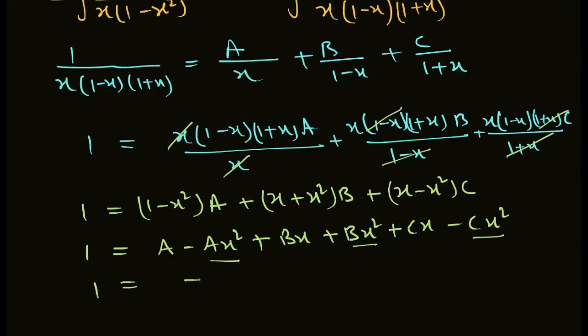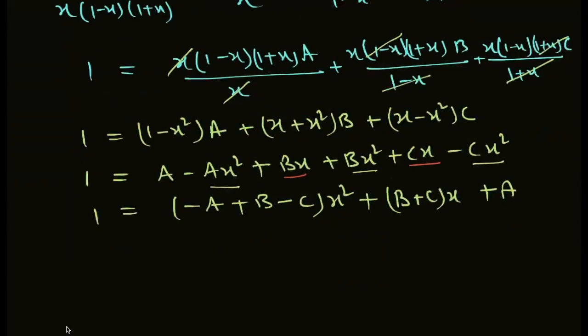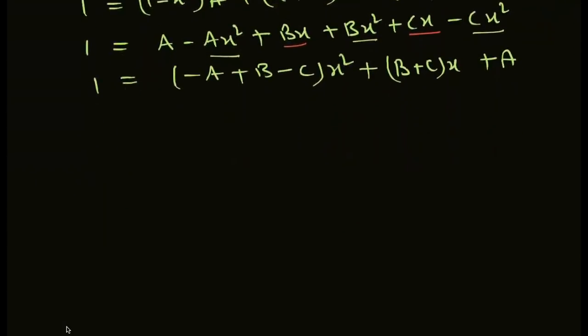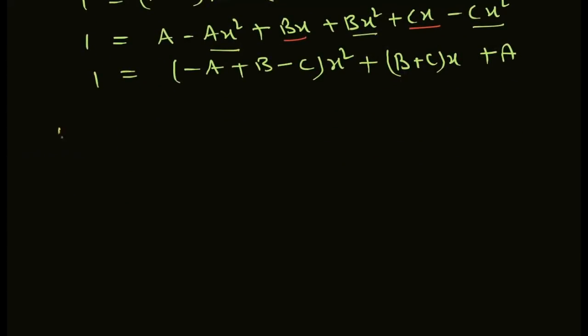Collecting the x squared terms together: 1 equals (negative A plus B minus C)x squared plus (B plus C)x plus A.